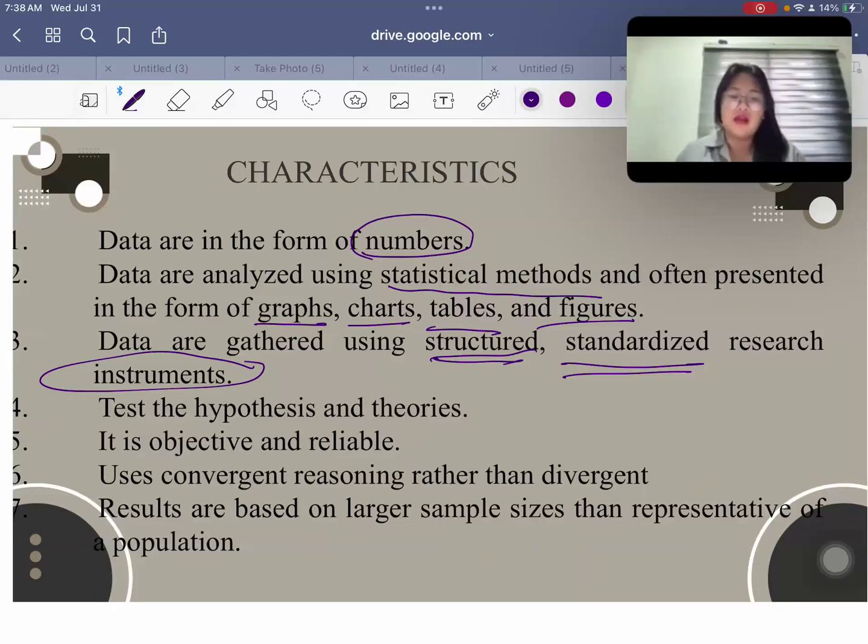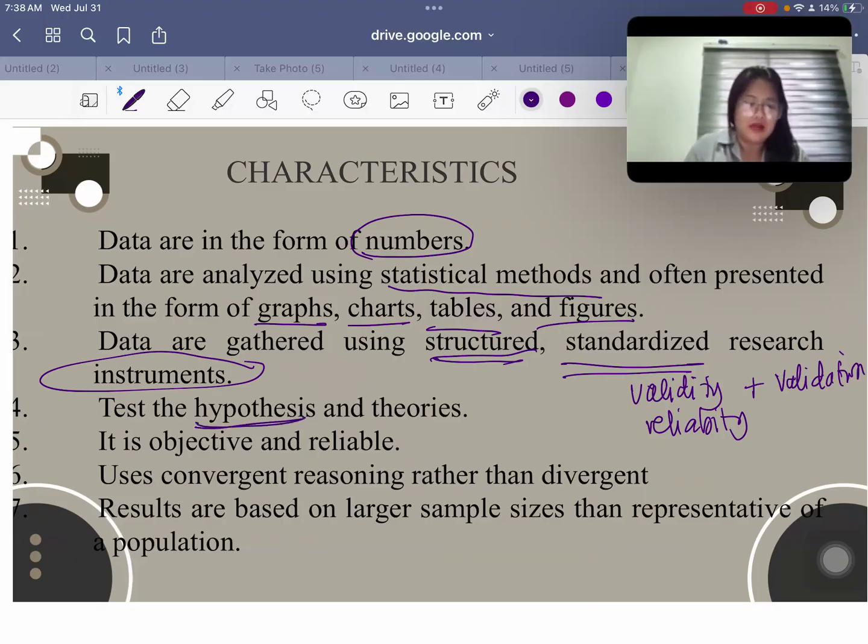Again, we use structured and standardized research instruments. That means you cannot just come up with a survey and then declare it as something that you could use. You have to check the validity and the reliability of the instrument plus the validation of the experts. Here, we also have the hypothesis testing and theories.